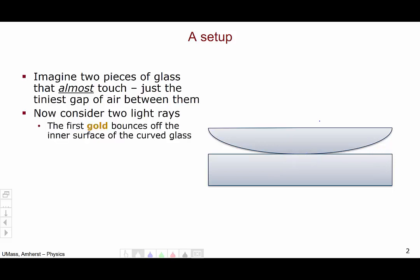Now let's add in two light rays. The first one, in gold, bounces off the inner surface of the curved glass. So it comes in and bounces off the inner surface of the curved glass. The next one, in red, comes in and bounces off of the flat surface of the bottom glass.